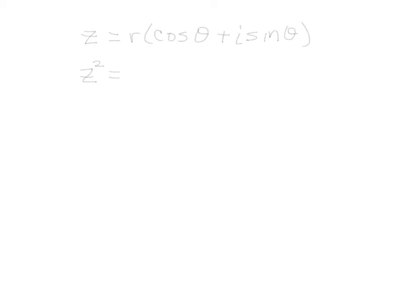Sometimes we're going to have to take a complex number and raise it to a power. Let's say that we want to take our complex number Z and square it. What happens on the right hand side if you square this? The modulus is R, that would just be R squared. The argument inside is theta, and what we need to do is multiply it by itself — that just means we would have cosine 2 theta, because we'd have two of those, and I sine 2 theta.